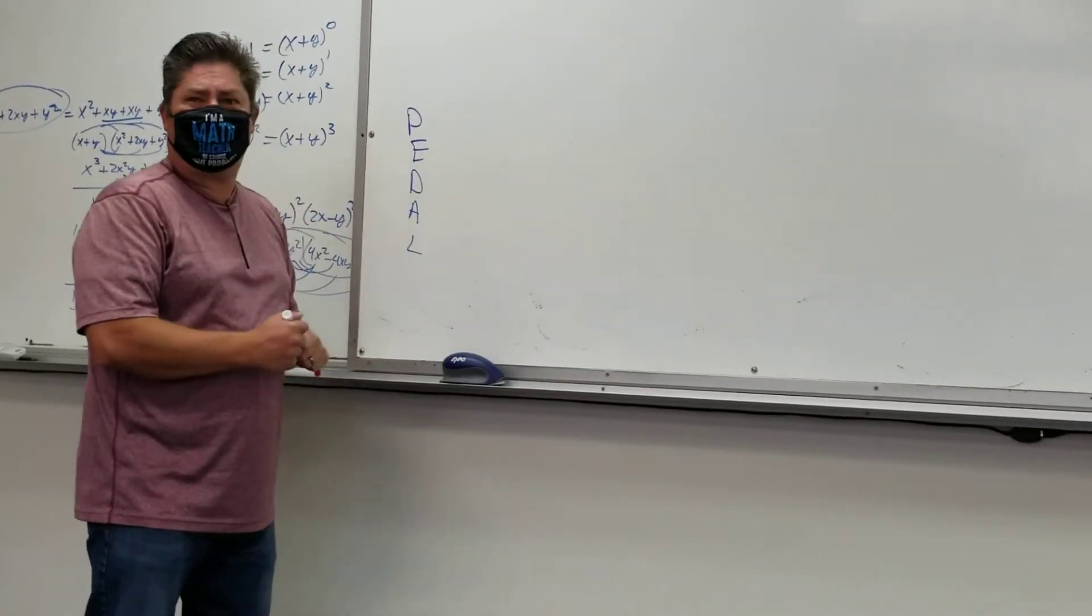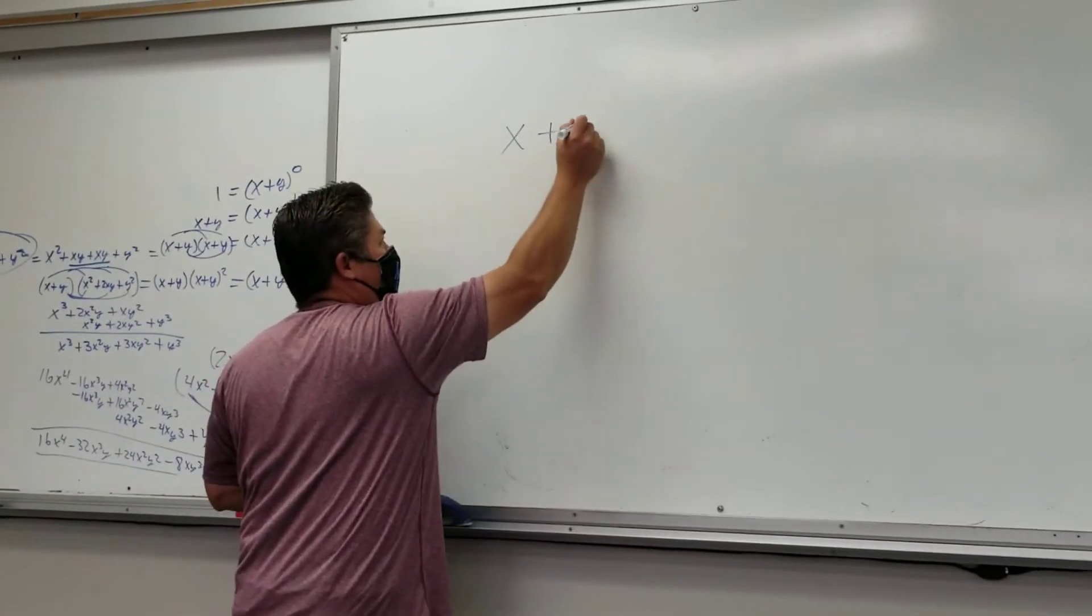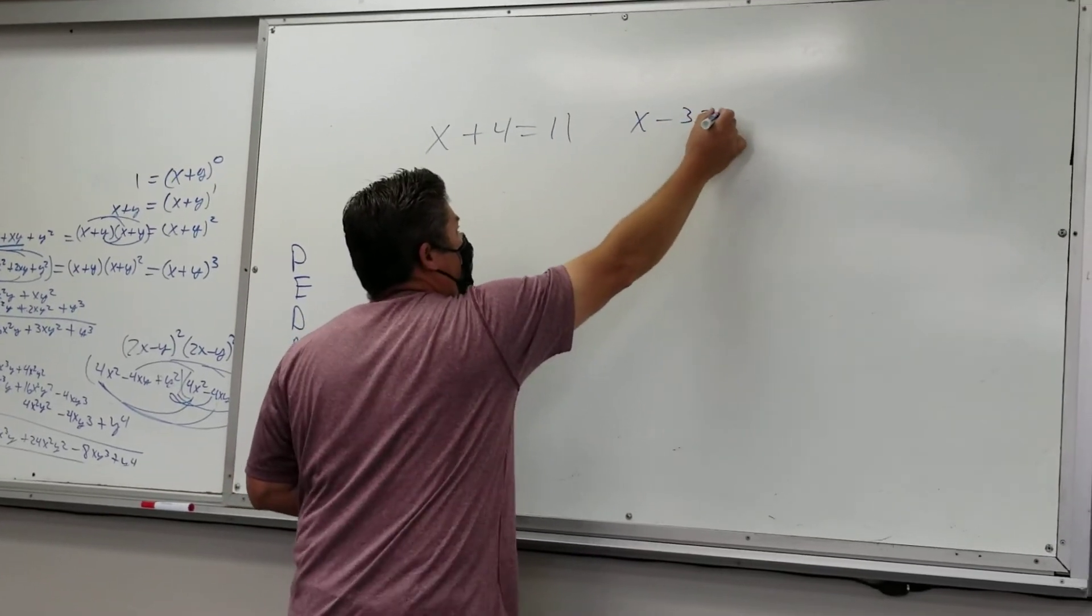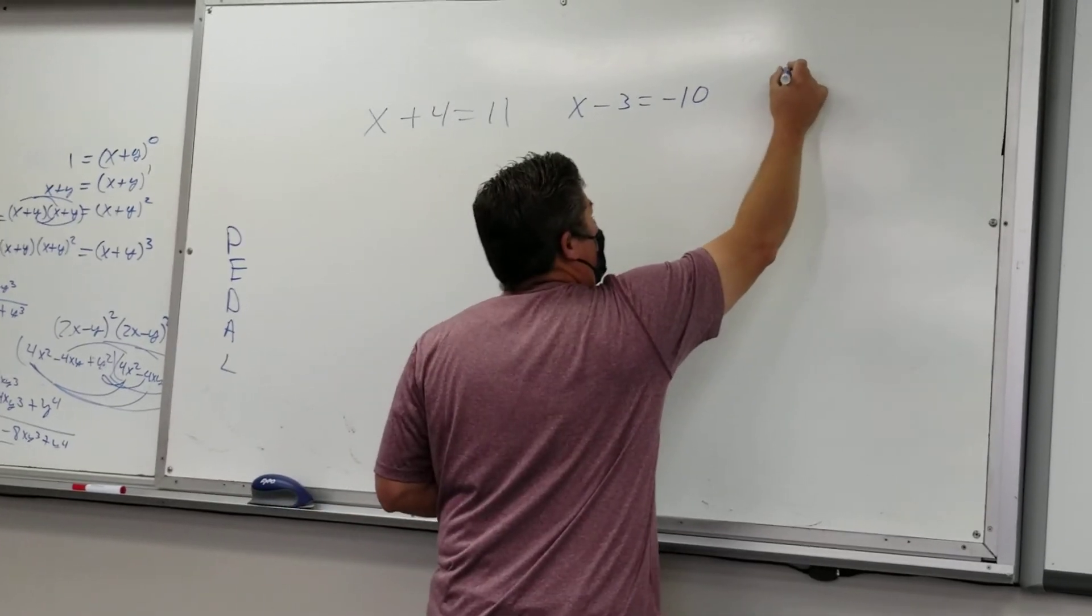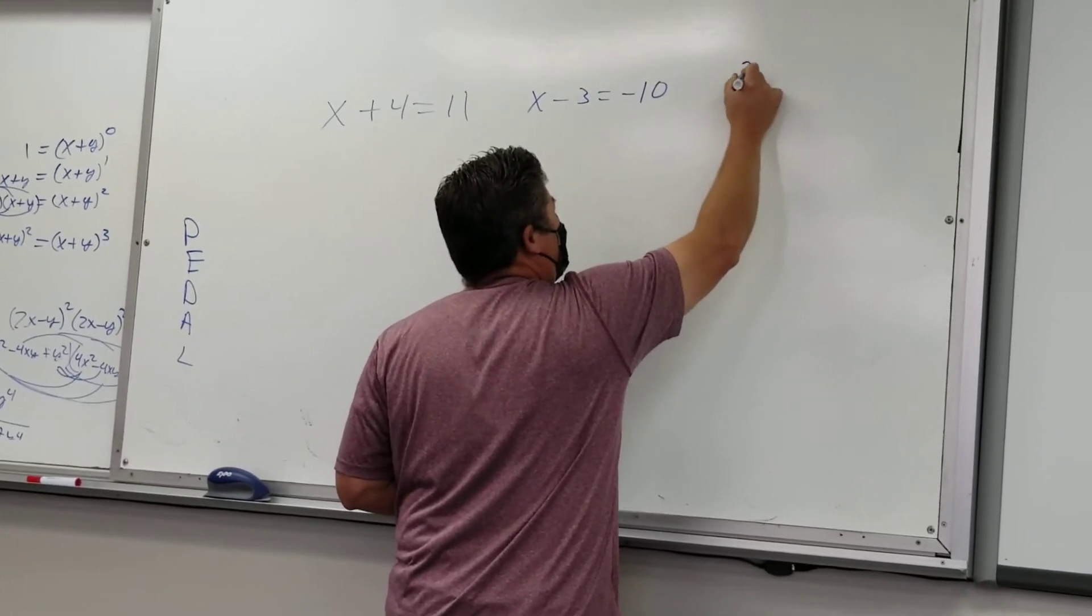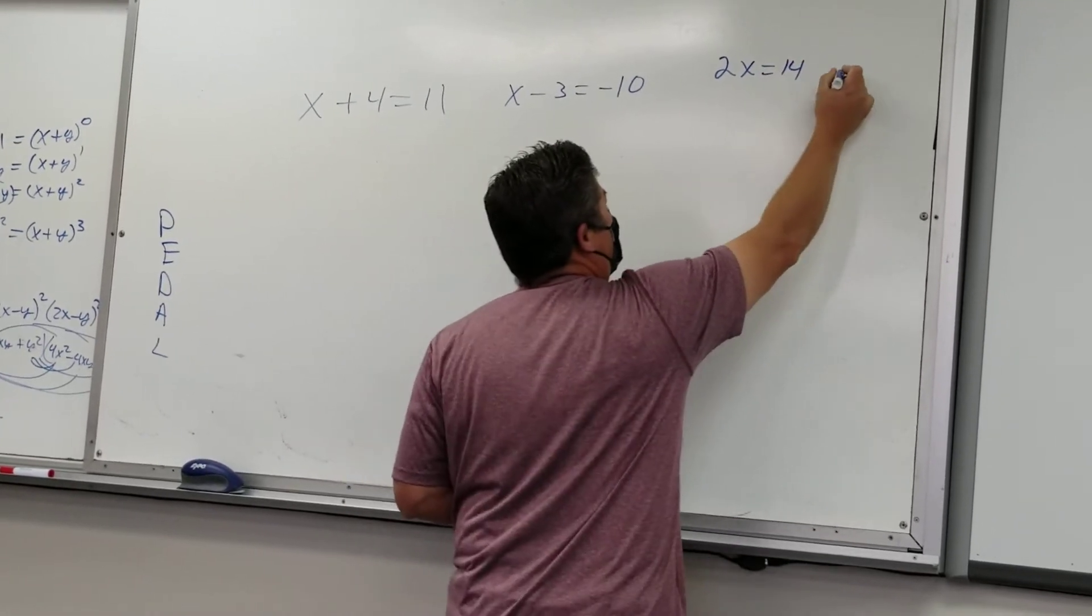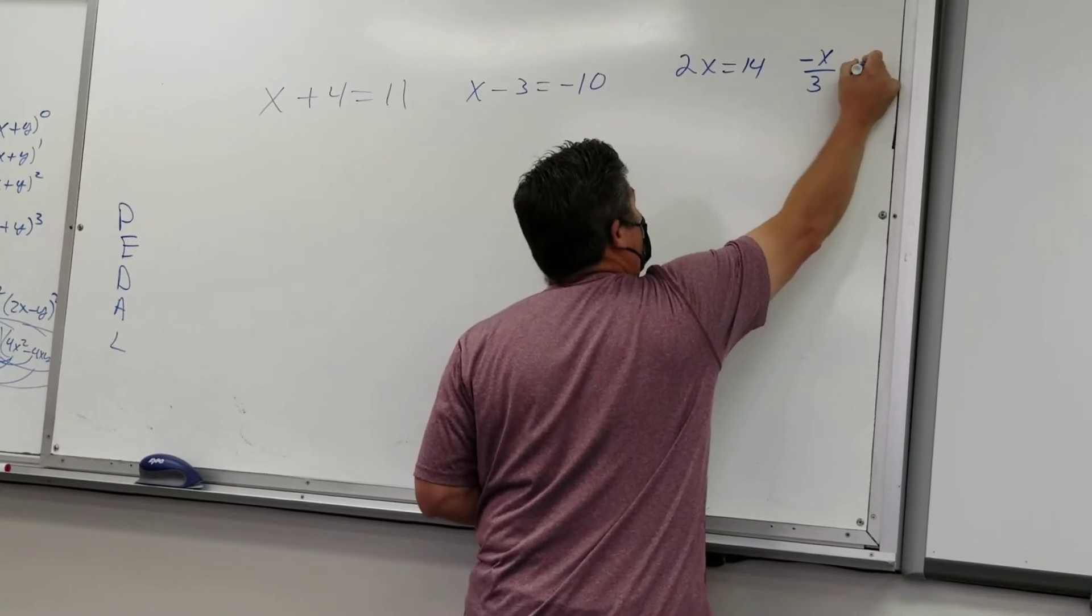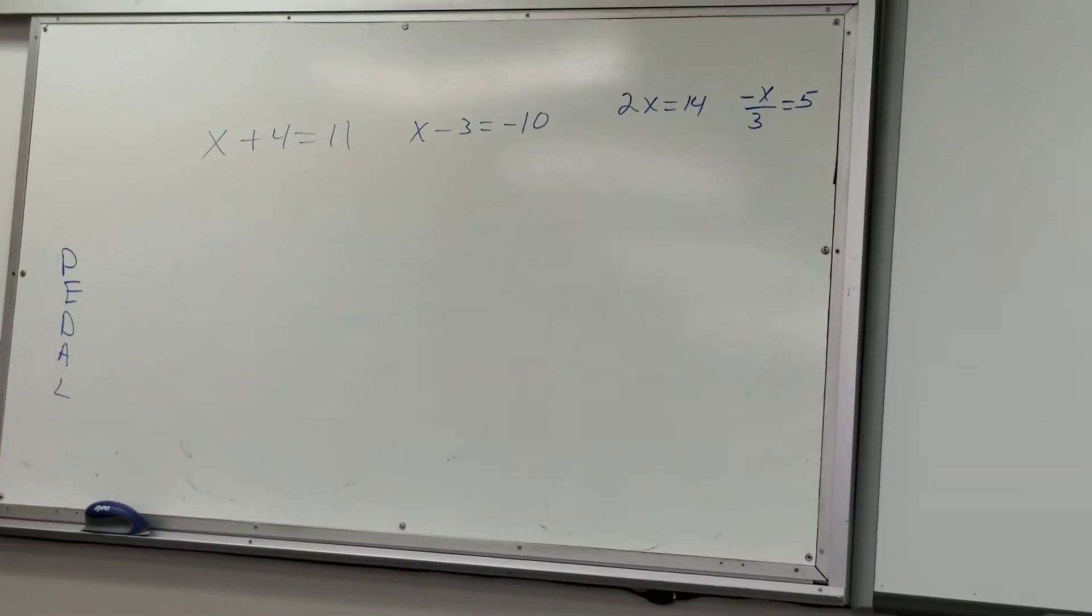So I'm going to give you the three types that we'll have today. We're going to have something like X plus 4 equals 11, X minus 3 equals negative 10, 2X equals 14, and negative X over 3 equals 5. So let's say these are the four equations I'm going to have today.